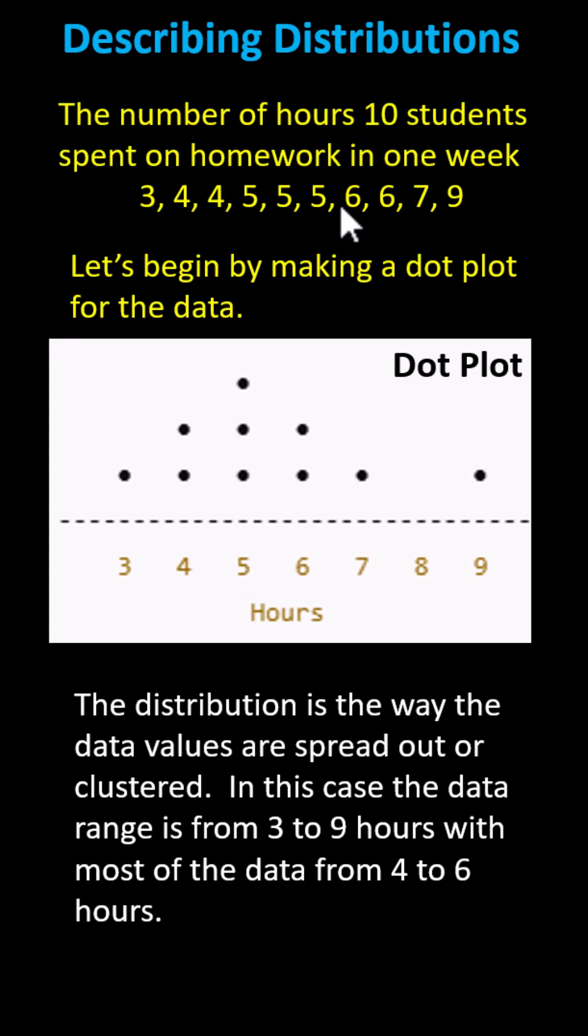One common way to display small sets of data is a dot plot, where notice the data values are from 3 to 9, and therefore we make a number line along the horizontal axis from 3 to 9, label the units of hours, and then every dot or every point represents a data value.